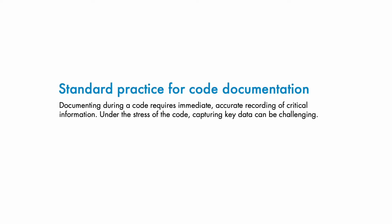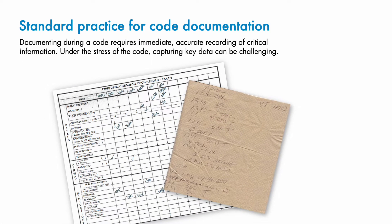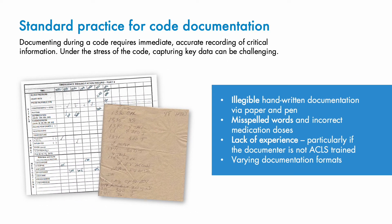Hospital codes are often fast-paced and chaotic. The room fills with clinicians and someone declares themselves the recorder. Ideally, they use the code record sheet found on the crash cart to record key code events. In reality, they may need to use a paper towel, a glove, scrub pants, or whatever is handy to record critical information in the heat of the moment. Recording during a code in this way can result in inaccuracies, missing, or illegible information, and can be even more difficult if the recorder is inexperienced or isn't ACLS certified.